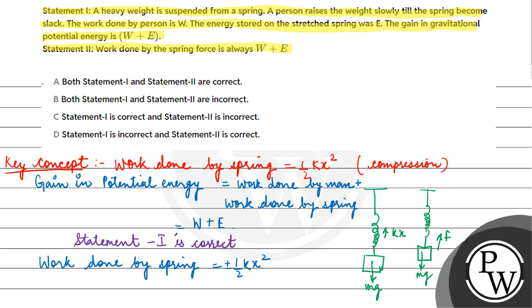Or extension, but when it is stored in the form of potential energy it will always be positive, so that would be equal to E. Here you have given E, so work done by spring force is not W plus E, so statement 2 is incorrect.